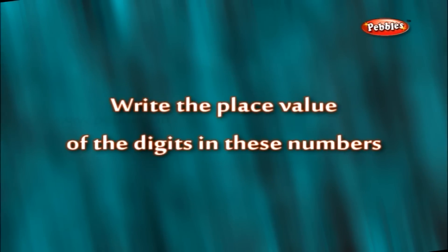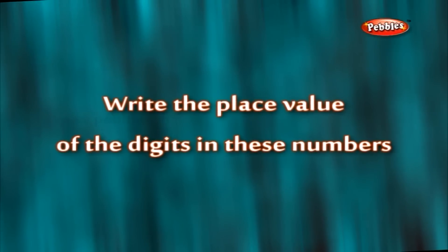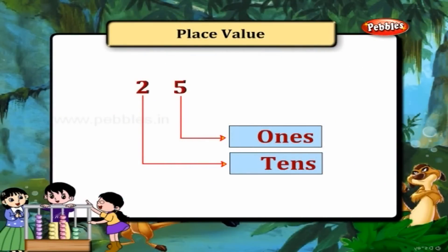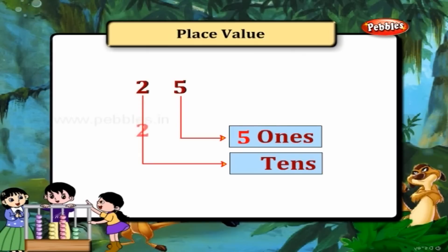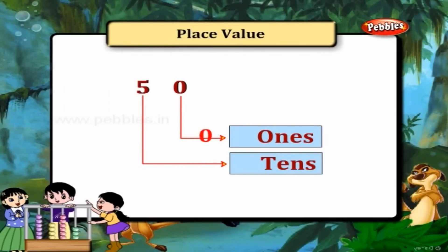Write the place value of the digits in these numbers. In 25, 5 is in the ones place and 2 is in the tens place. In 50, 0 is in the ones place and 5 is in the tens place.